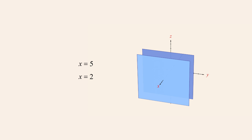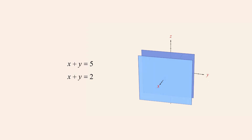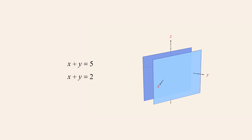As an example, let's take a very simple system of two parallel planes. Notice that both equations have the same x-coefficient of one, but the constants in the equations are different. Now let's make the equations a bit more complicated by adding a y-term. These equations still describe parallel planes — the variable coefficients are the same in both equations while the constants are different. In fact, any two equations whose coefficients are the same but whose constants are different will describe parallel planes.